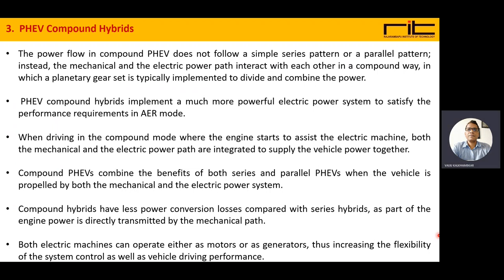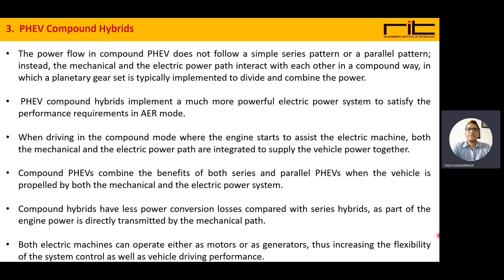The compound plug-in hybrid electric vehicle combines the benefits of series-parallel as well as parallel hybrid plug-in hybrid vehicles. The vehicle is propelled by both the mechanical and electrical power systems at a time. Compound hybrids have less power conversion losses compared with the earlier two modes — the series hybrid mode and the parallel hybrid mode — as part of the engine power is directly transmitted by the mechanical path. Both electric machines can operate either as a motor or a generator, thus increasing the flexibility of the system control as well as the vehicle driving platforms.